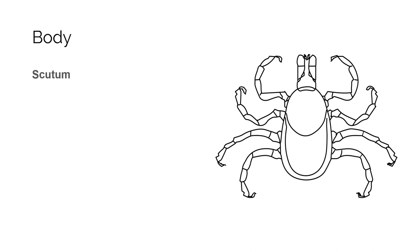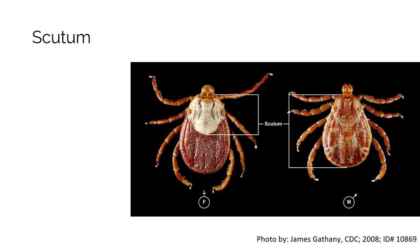Certain characteristics on the body of the tick can be used in identification. First, let's look at the scutum. The scutum is a hard shield on top, or on the dorsal surface, of a tick. Observe the color, pattern, and shape, as these characteristics vary between species. Some species have a solid-colored scutum, called inornate, and others have a pattern, called ornate. What is the shape of the scutum — is it more like an oval or a baseball diamond? Does it cover the entire top of the body or only go part of the way down?